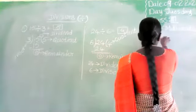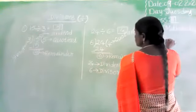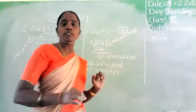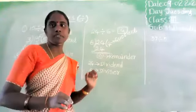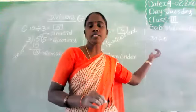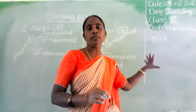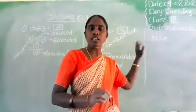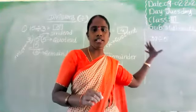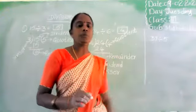Next problem: 37 divided by 5. Here 37 is the dividend and 5 is the divisor. We have to find the quotient and remainder. Here the remainder is not the answer — quotient is the answer. But observe what remainder will come here.